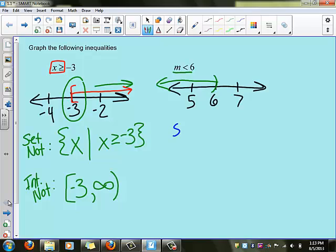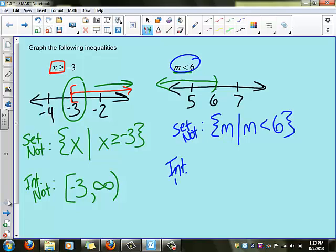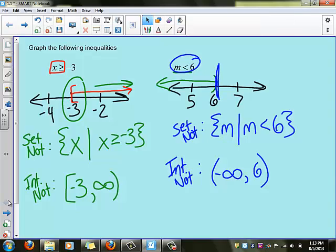Similarly on the second one, if we wanted to do set notation, we'd have a set m, because that's our variable. And notice now we have that m is less than 6, so all the values such that m is less than 6. In interval notation, notice this time we don't have a lower bound, because it keeps going on forever, so we'll have from negative infinity, but our high bound is 6, because notice we stop here. 6 is not included, so we use our parenthesis.